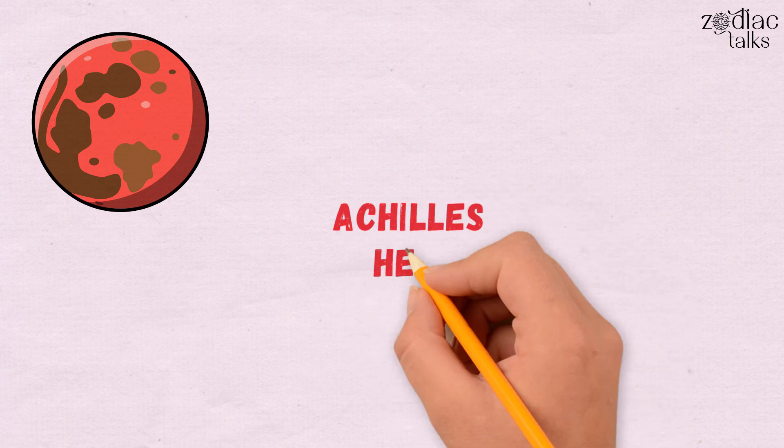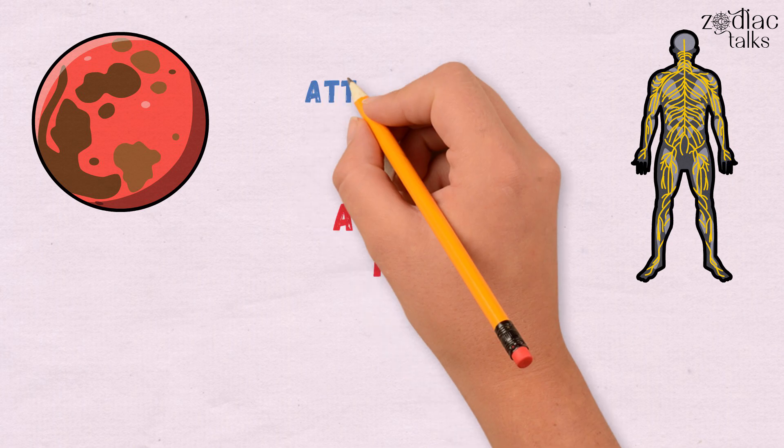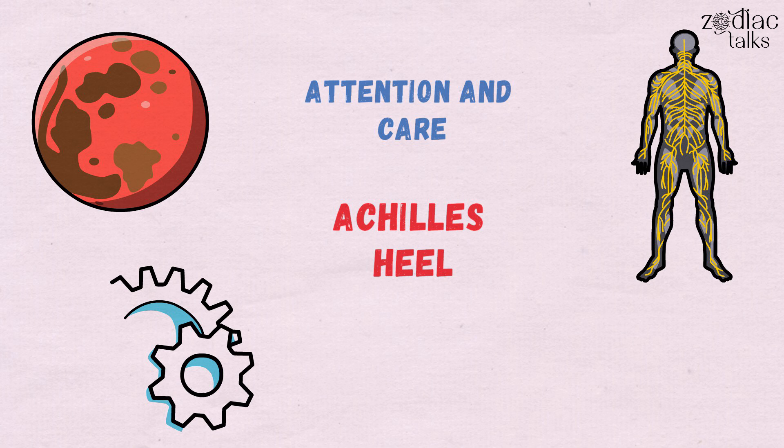The planet or sign found in this house is the Achilles heel—that organ or part of the body or aspect of the self that needs more attention and care. If this part functions well, the whole biopsychic system will likely be balanced and strong.